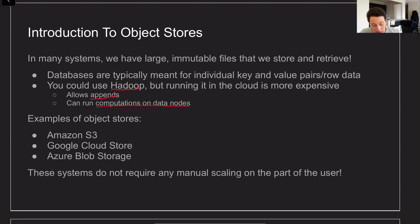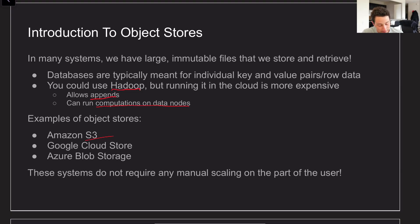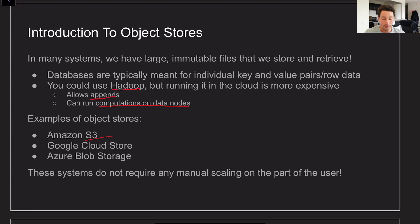The main examples of object stores you'll hear about are S3, which is what we're focusing on, and the offerings from other major cloud providers — Google and Microsoft offer their own. A really nice thing about object stores is they're completely managed by the cloud provider; you don't have to do anything on your end to scale them out over time.